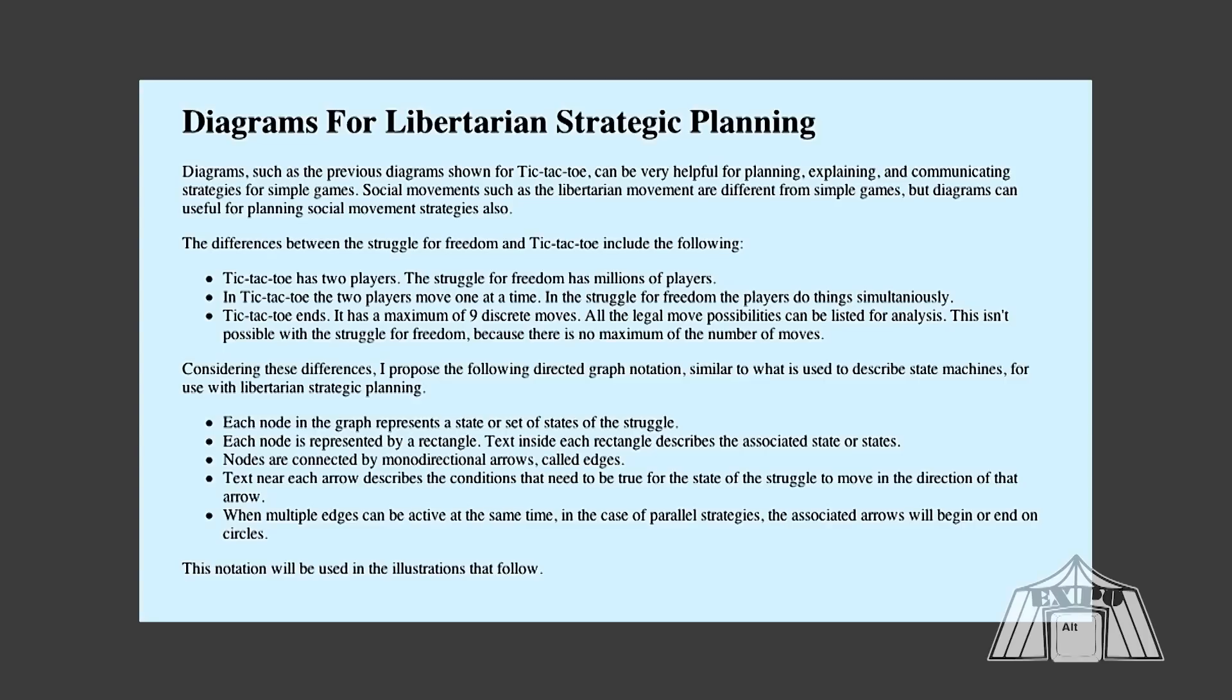So what I did was I came up with a notation that uses some of the notation from tic-tac-toe game theory, but it can be applied to an ongoing strategy like ours. I've chosen to make each node in the diagram be a rectangle. Each node represents a state of our struggle. Text inside the rectangle describes that state. Nodes are connected by arrows, monodirectional arrows. Text near the arrow describes the conditions that need to be true for us to follow that arrow to the next state. When there's multiple arrows that can be active at the same time, in the case of parallel strategies, we'll show that with a circle, because you can do more than one thing at once.